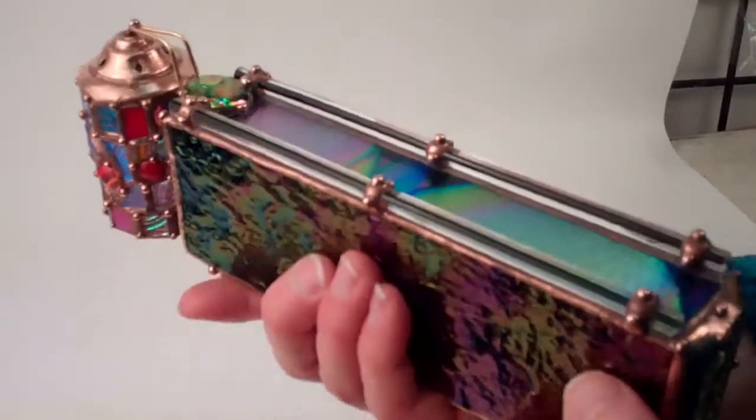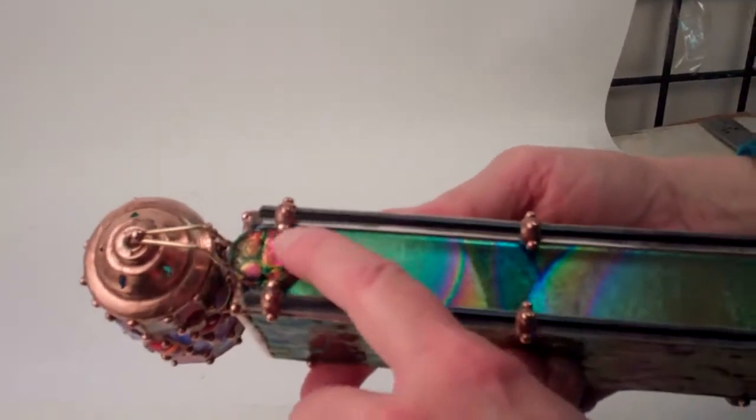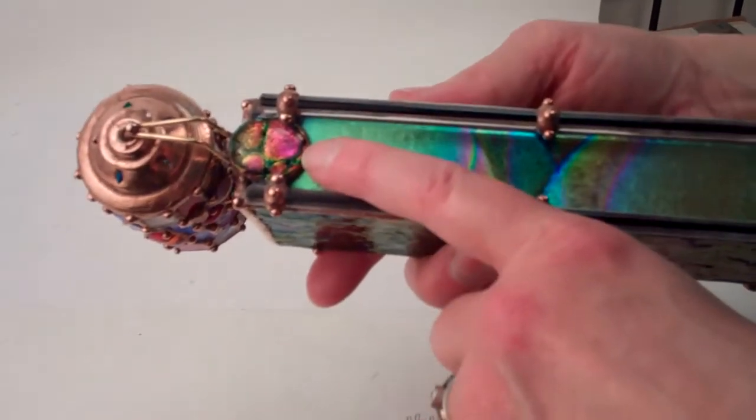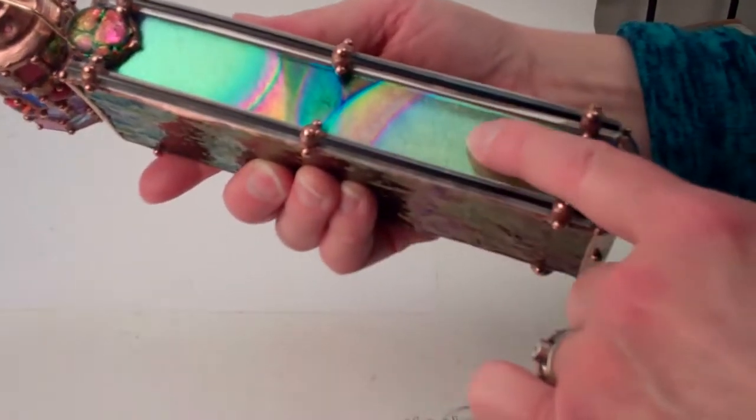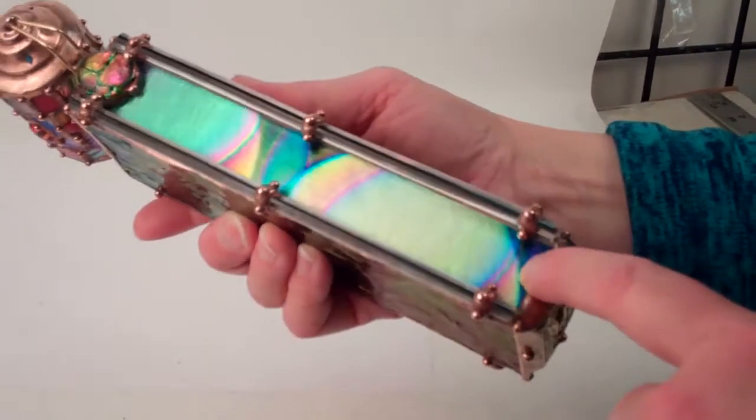Now the rest of the kaleidoscope itself is stunning with the glass work that Sue creates. Another large piece of fused dichroic glass, and then the top panel is CBS dichroic glass, or coatings by Sandberg.